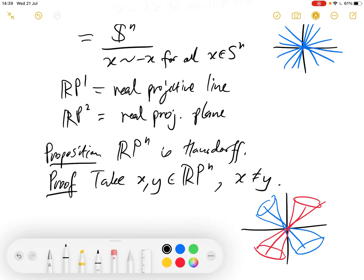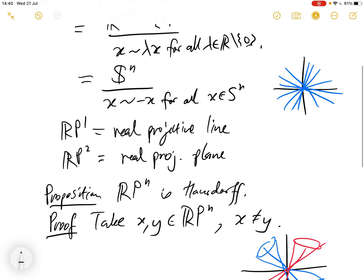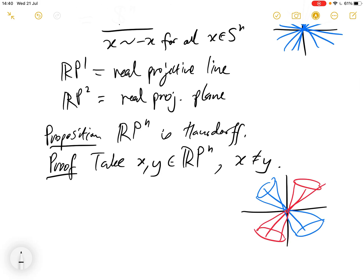I think it will be easier if we consider RPn to be a quotient space of Sn. So considering RPn to be a quotient of Sn, this quotient up here, then what we can do is the same sort of thing.